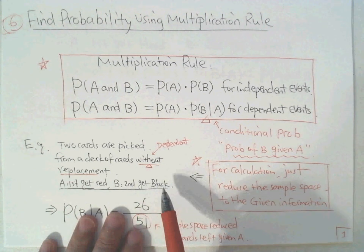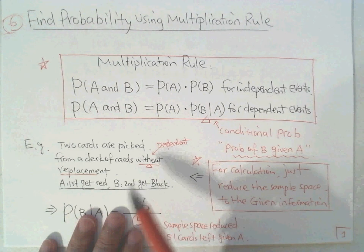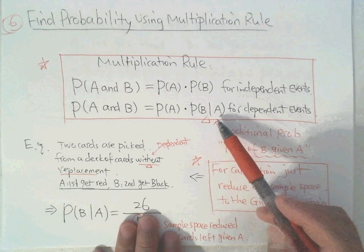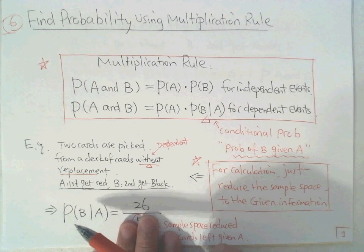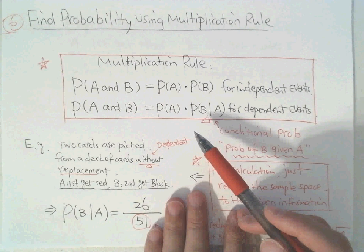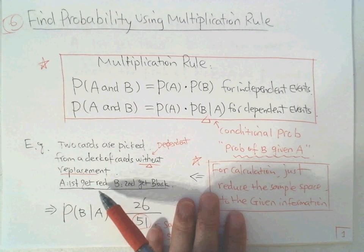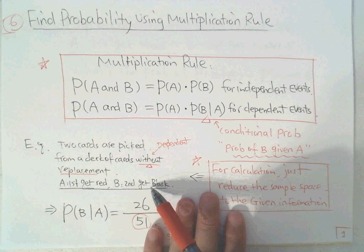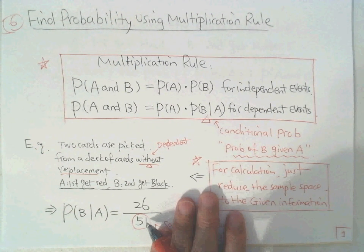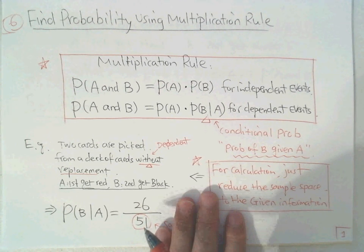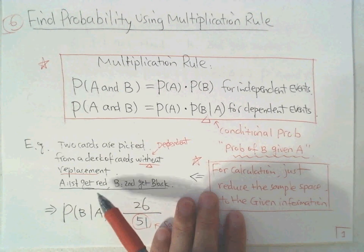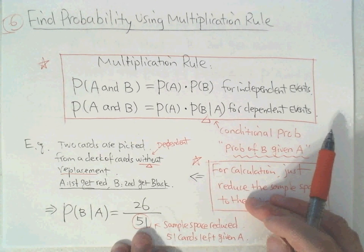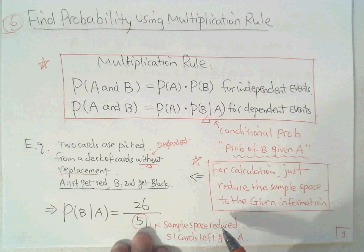We need to find the conditional probability of B given A. Suppose the first step, we already picked a red card without replacement. For the second step, the sample space is no longer 52 — it's only 51 cards left, because the first step you picked one and didn't put it back. This we call the reduced sample space.